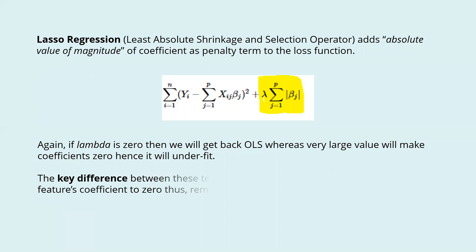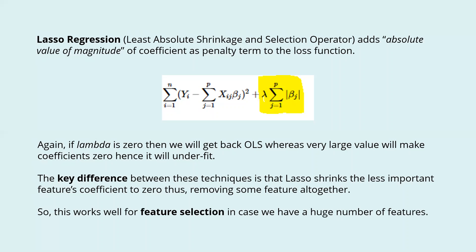The key difference between these techniques is that Lasso shrinks the less important features' coefficients to zero, thus removing some features altogether. This works well for feature selection when we have a huge number of features.